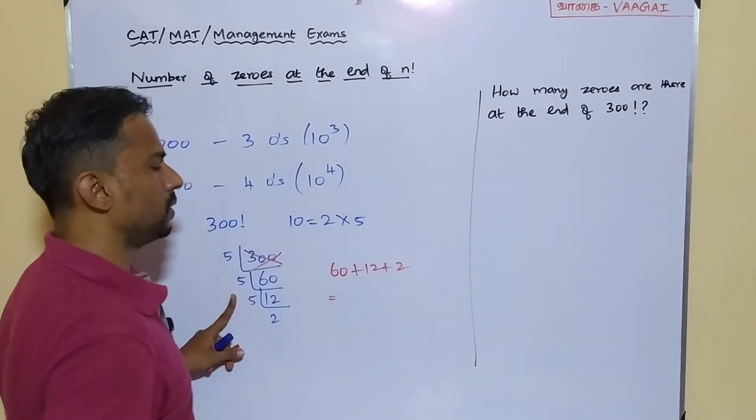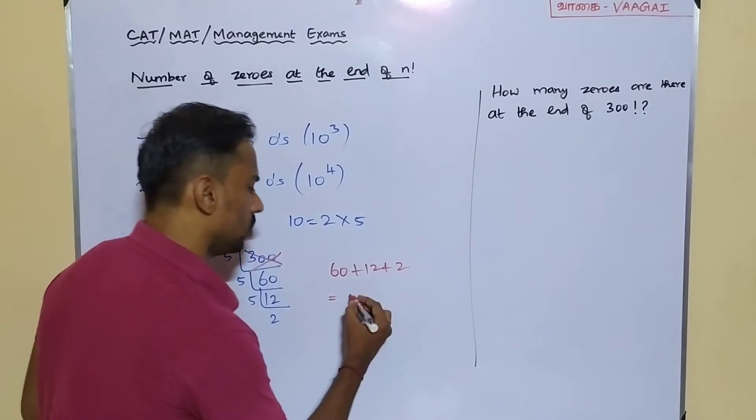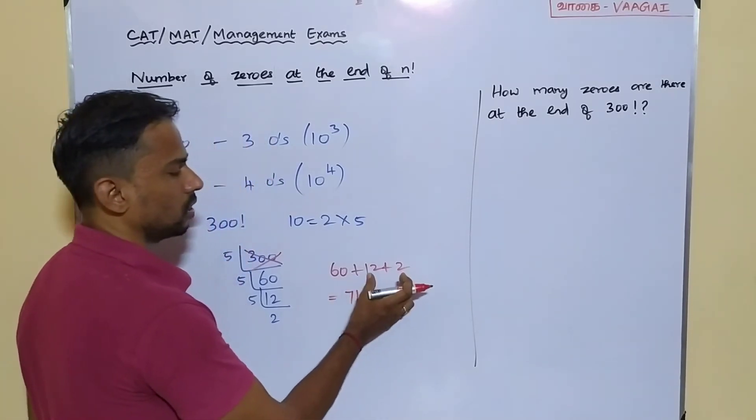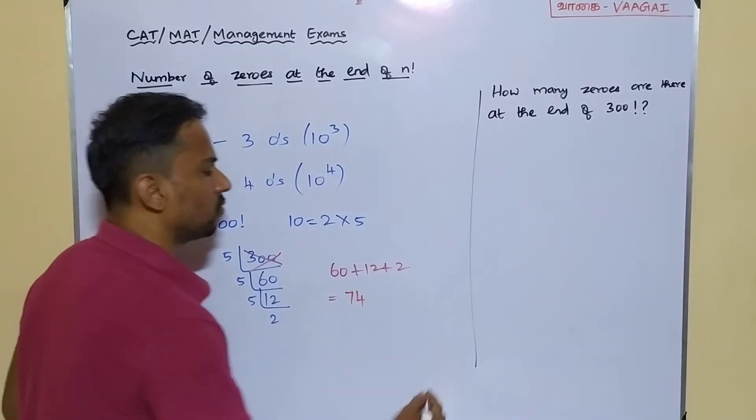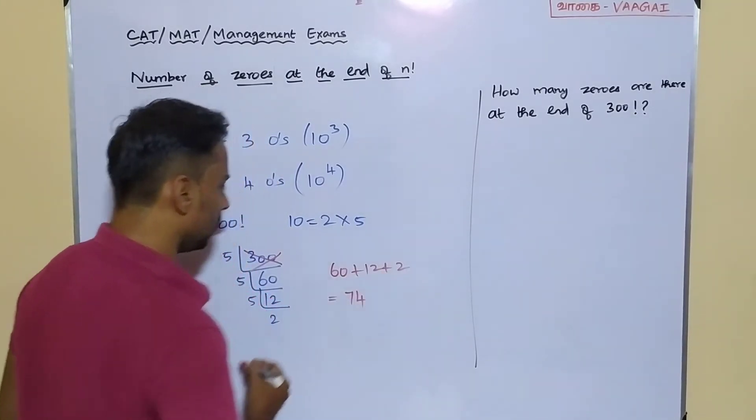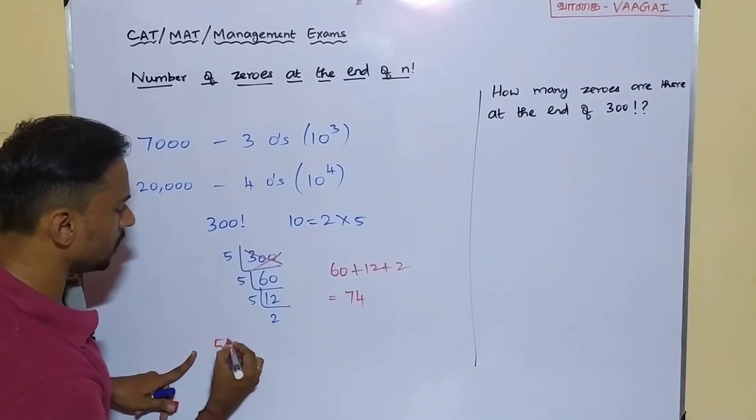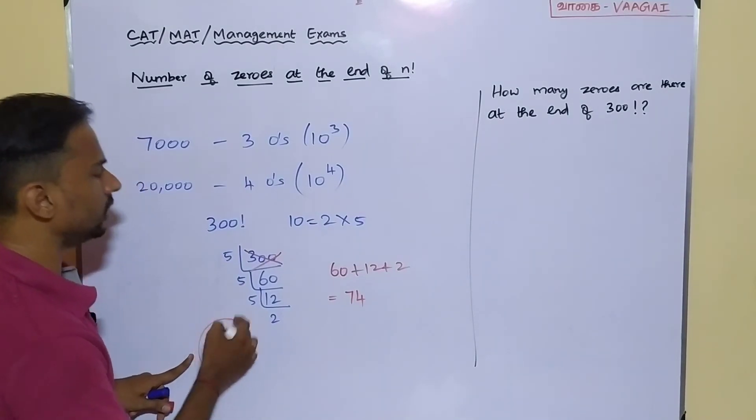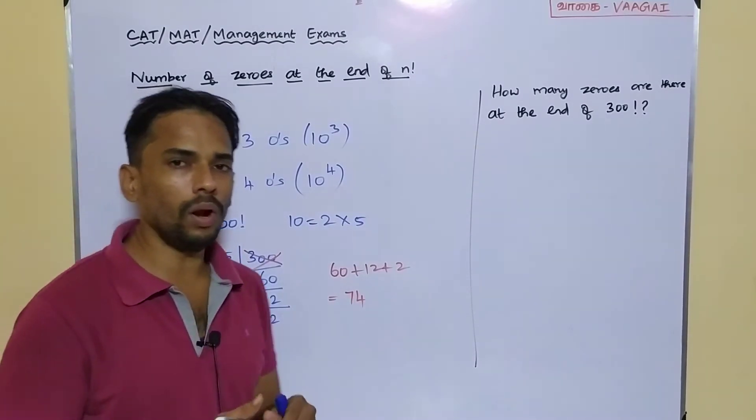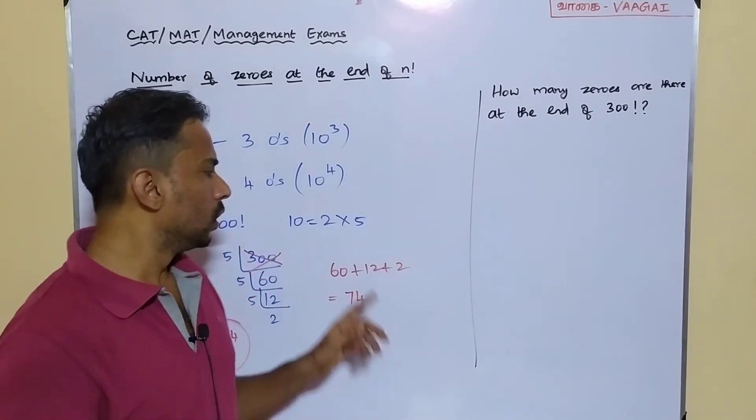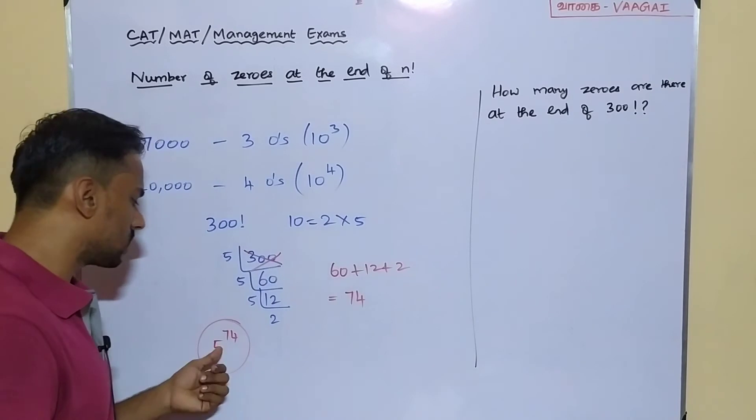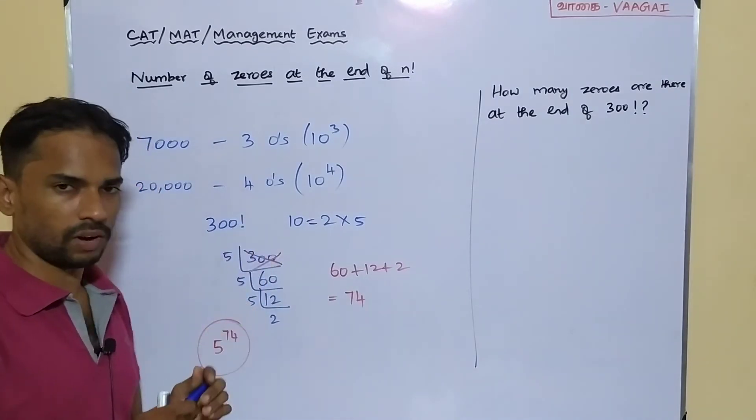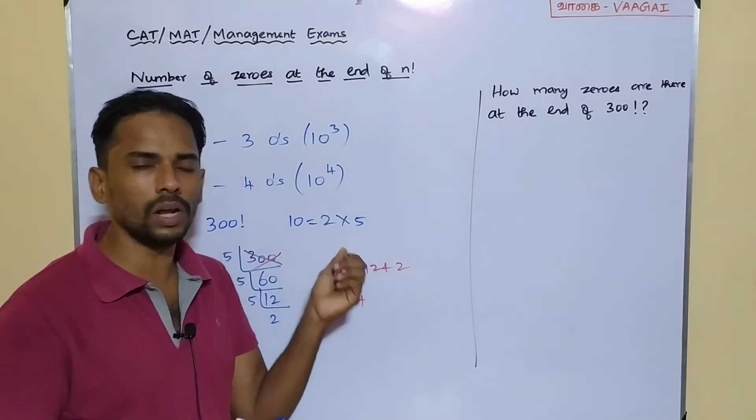In that case, the answer would be 74. 60 plus 14 will be 74. That means we have got maximum 5 power 74 inside this 300 factorial. And what other thing we can assure is that the highest power of 2 will be definitely more than the 74 inside this 300 factorial. Why? Because this 2 is comparatively a smaller number.